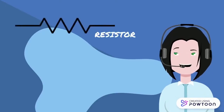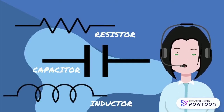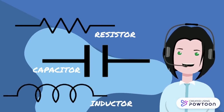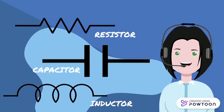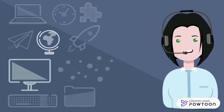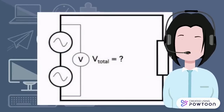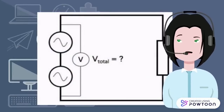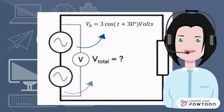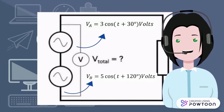Since resistors, capacitors, and inductors all respond differently to AC circuits, complex numbers are needed to calculate the current, voltage, and resistance. To demonstrate the application of complex numbers in AC circuits, here is an example calculation. V of A equals 3 cosine(t + 30°) volts, and V of B equals 5 cosine(t + 120°) volts.